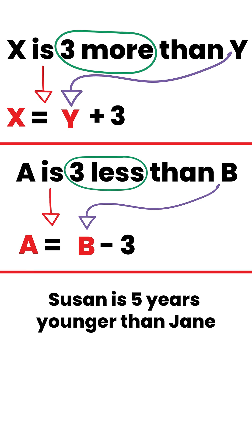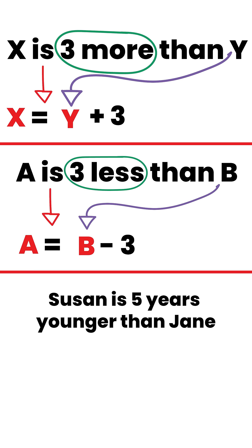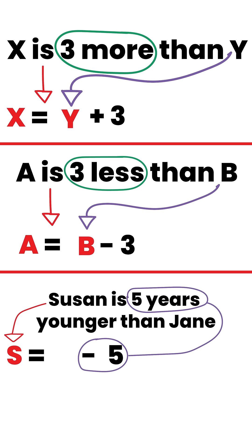Let's say the question says that Susan is five years younger than Jane. What does that mean? That means Susan equals five less. Now who is she five years younger than? Jane. So Susan equals Jane minus five.